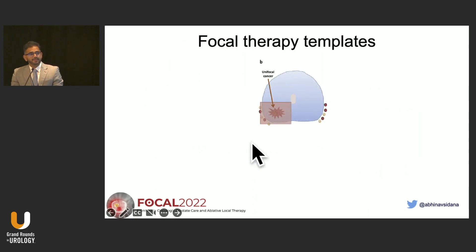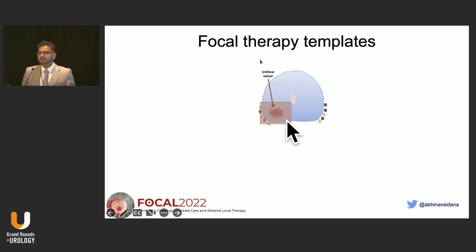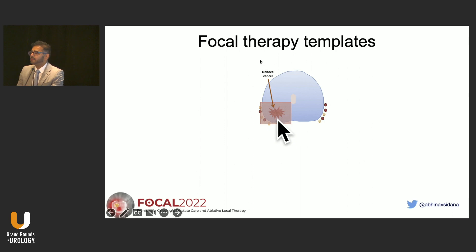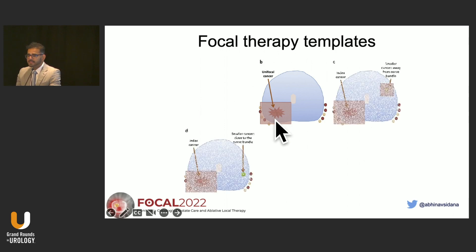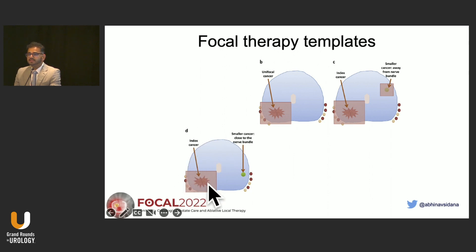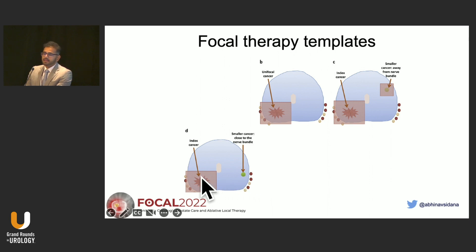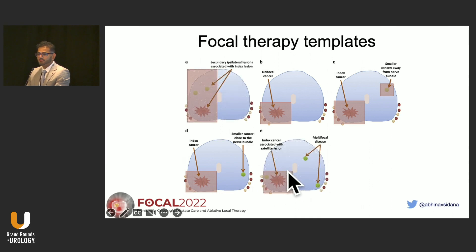There are some treatment templates you can adopt in practice. The easiest and best case to start with is unifocal clinically significant disease that can be destroyed with a wide margin for optimal oncological efficacy. In reality, we often see a significant disease on one side and a contralateral insignificant disease — the significant disease can be destroyed and the contralateral disease observed with active surveillance.